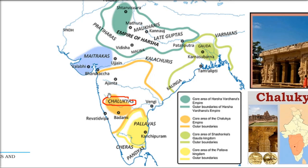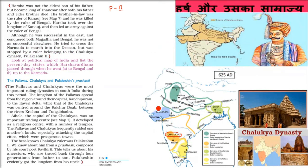The capital of the Chalukyas was Aihole, and the capital of the Pallavas was Kanchipuram. If you see that their borders are overlapping, so most of the time the Chalukyas would attack Pallavas towns and the Pallavas would attack prosperous Chalukya towns. This was all happening at that time.